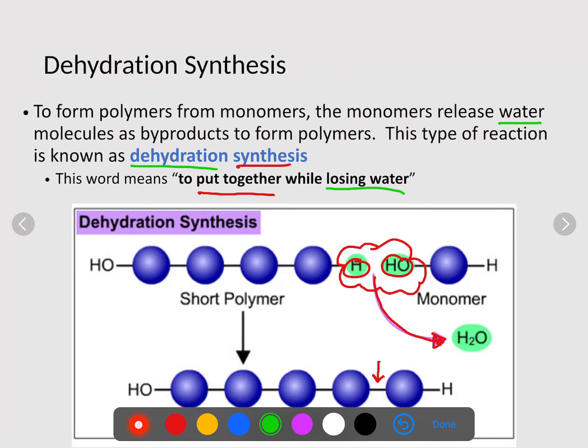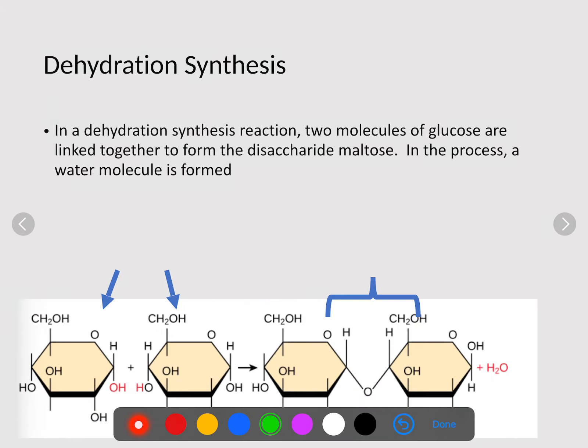In dehydration synthesis reactions, two molecules of glucose are linked together to form what's known as a disaccharide. In this process, a water molecule is formed. Notice how water is removed to create our bond. Here are our two monomers, two monosaccharides. Water is removed to create one polymer or one large molecule.